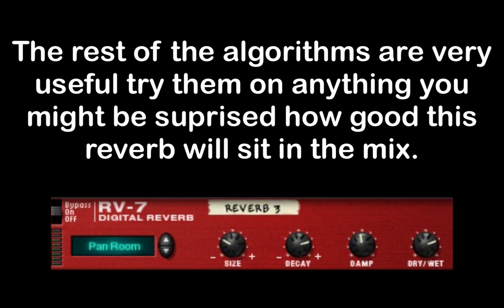So that's the RV7 digital reverb in Reason, and I suggest you try it out. If you need a quick reverb on anything, it's a great little tool to have. The four algorithms — gated, low density, stereo echoes, and pan room — you're not going to find an easier way to get those effects out of anything that comes in Reason. So I suggest you use it, and as always, thanks for stopping by. I look forward to seeing you in the next session. Take care.